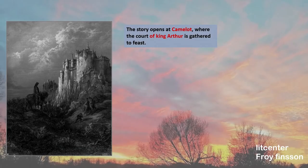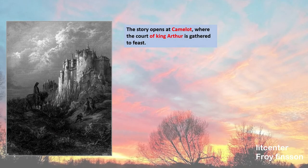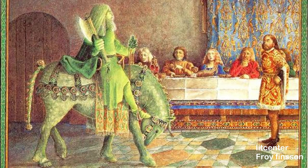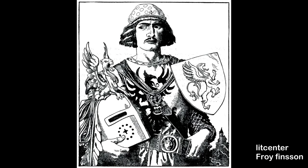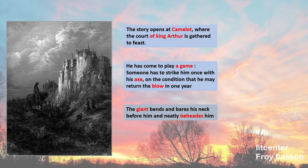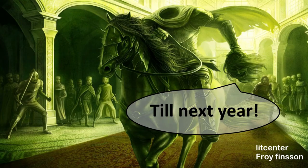The story opens in Camelot, where the entire court of King Arthur is gathered to feast. But suddenly a gigantic figure, entirely green, rides into the hall. He insists that he has come to play a friendly Christmas game: someone has to strike him once with his axe, on the condition that the Green Knight may return the blow in one year and a day. King Arthur himself is prepared to accept the challenge, but Sir Gawain, the youngest of Arthur's knights, asks for the honour instead. The giant bends and bears his neck, and Gawain neatly beheads him in one stroke. The Green Knight picks up his beheaded head, reminds Gawain that the two must meet again at the Green Chapel in one year and a day, and then he leaves.